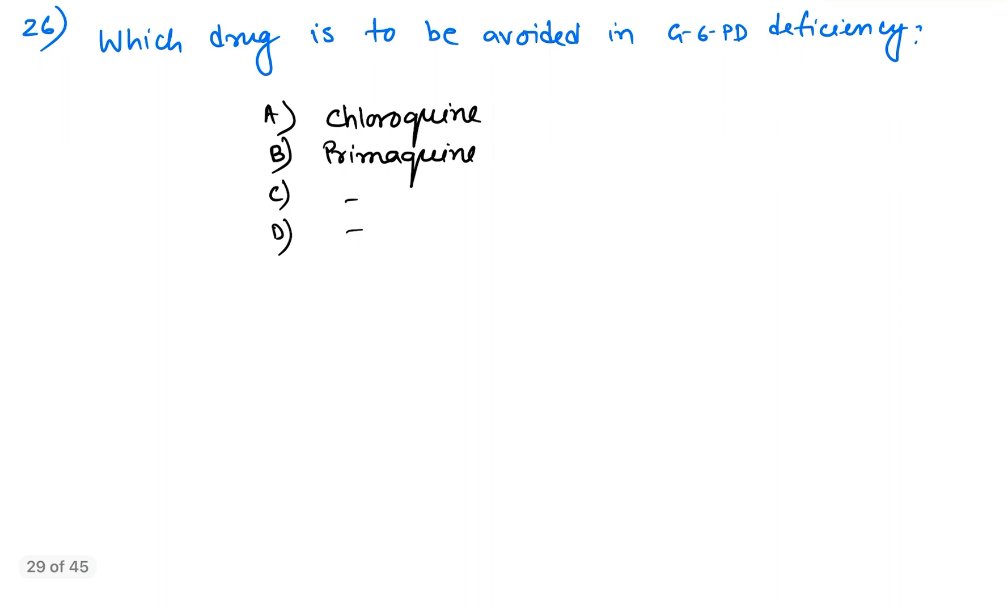Coming to question number 26. Which drug is to be avoided in G6PD deficiency? As all of you know, primaquine can cause hemolysis in G6PD deficiency. So this drug is to be avoided.